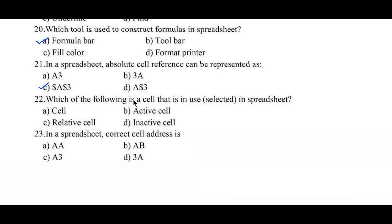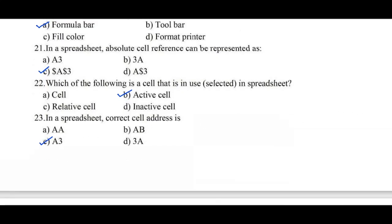Question number 22: Which of the following is a cell that is in use or selected in a spreadsheet? Option A: cell, B: active cell, C: relative cell, D: inactive cell. Option B, active cell, is the right answer. Question number 23: In a spreadsheet, the correct cell address is — Option A: A, B: B, C: A3, D: 3A. Option C, A3, is the right answer.